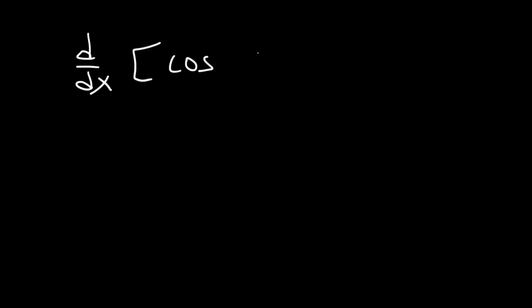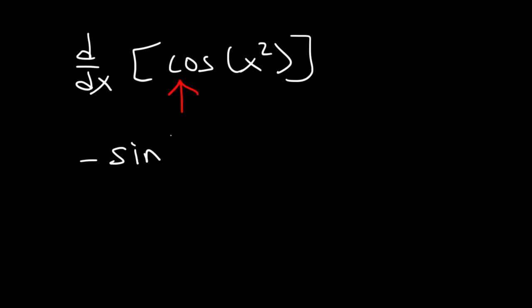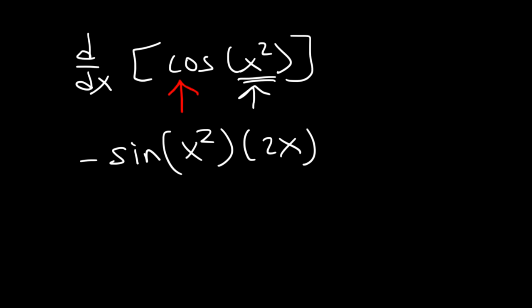Now what is the derivative of cosine x squared? First, differentiate the outside part of the function, cosine. The derivative of cosine is negative sine. Now the inside part of the function has to remain the same — that is the angle of cosine, so it's going to be x squared. And then differentiate the inside function, x squared, which is 2x. So basically, you're working away from the outside towards the inside. The final answer is negative 2x sine x squared.